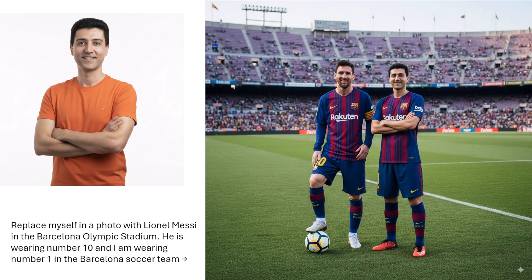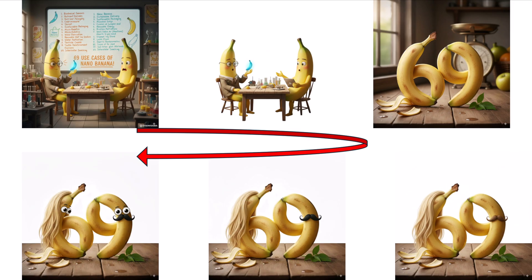And now watch this: Lionel Messi swaps places with me in a Barcelona stadium. He's number 10, I'm number 1, crowd going wild. I can almost hear the commentators struggling to explain this scene. One more — the most sophisticated corporate presentation in fruit history: two distinguished banana executives in tiny glasses having a very serious business meeting about 69 use cases of Nano Banana. In around one minute, we've already created a billionaire cat, a world-class athlete Leonardo da Vinci, me as a yacht guy and a whole suite of fun. This is the new pace of creativity.